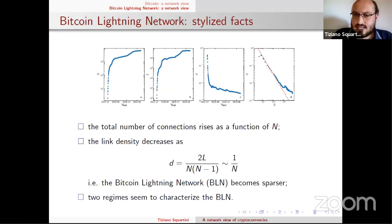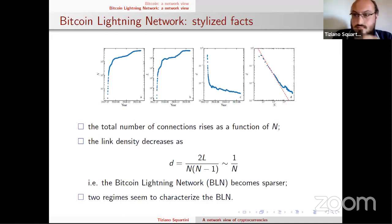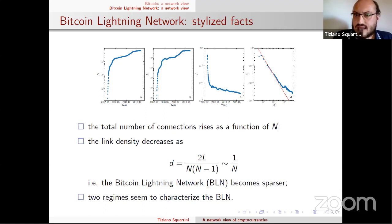We repeated basically the same analysis as for Bitcoin. Even for the Lightning Network, the total number of nodes and total number of links rises, while link density decreases. There are two different phases: in the first months the growth was very steep, then the growth of nodes and links became much lower and link density decreased less steeply. However, in the first period the same 1/N law for density is recovered — an interesting similarity between the two layers.